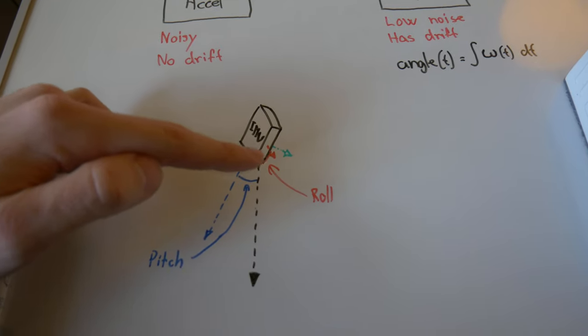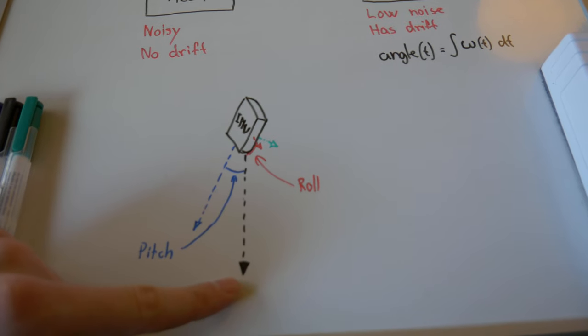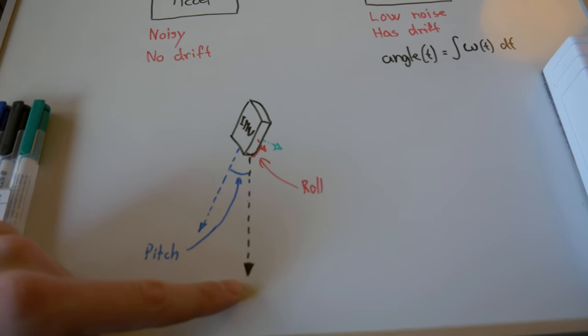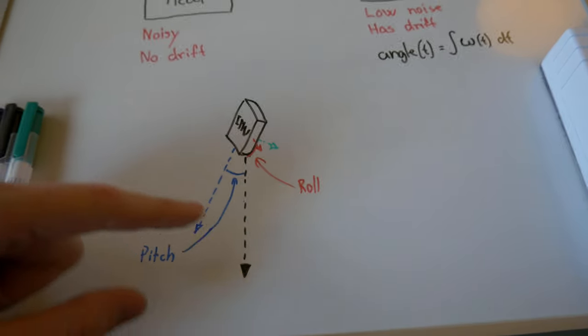You will be able to measure your pitch and roll angle compared to the gravity vector. This is a pretty good way to measure the orientation, but if there is any disturbance, if you move the IMU or cause any acceleration, then this measurement is going to be very unreliable.